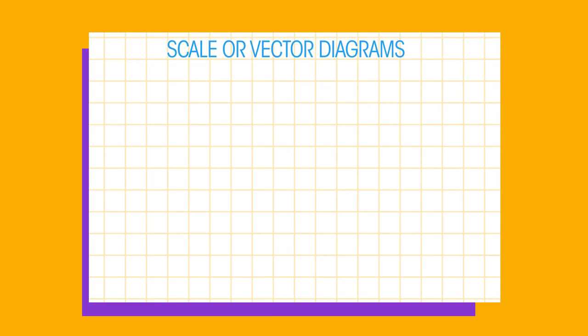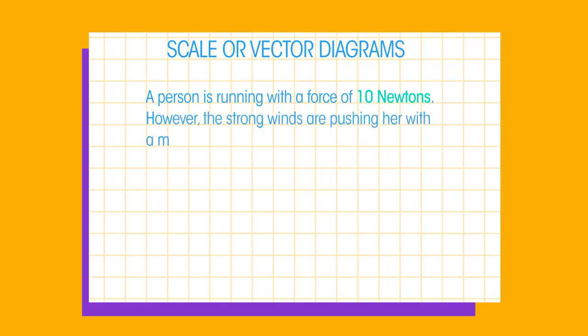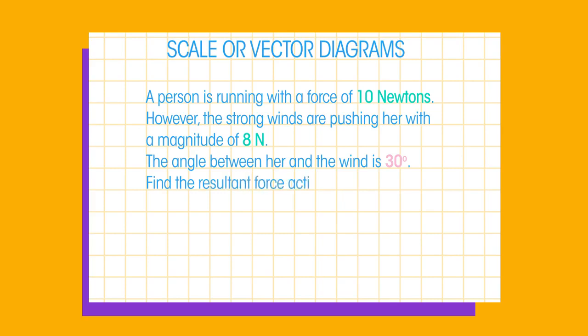Here's an example. A person is running with a force of 10 newtons. However, the strong winds are pushing her with a magnitude of 8 newtons. The angle between her and the wind is 30 degrees. Find the resultant force acting on the runner.